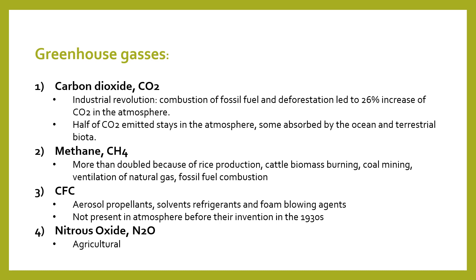Greenhouse gases include carbon dioxide — which comes mainly from industry, greatly increasing since the industrial revolution — methane from rice plantations, livestock, biomass burning, and natural gas and fossil fuels; CFCs from aerosol propellants, which didn't exist before the 1930s but emerged through human development; and nitrous oxide from agriculture. These are the greenhouse gases.